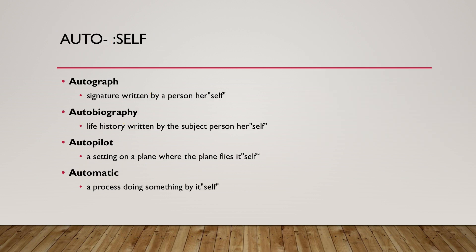Last but not least, we have another Greek prefix, 'auto,' which means 'self.' An easy way to remember that auto means self is through the word automatic, which means a process doing something by itself. The word autograph means a signature written by a person himself or herself. The word autobiography means a life history written by the subject person herself. And finally, the word autopilot means a setting on a plane where the plane can fly itself.